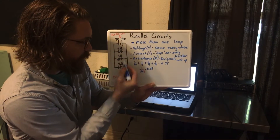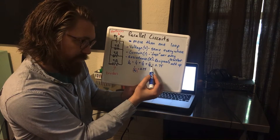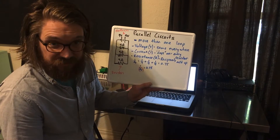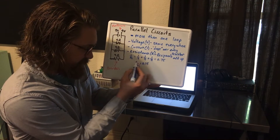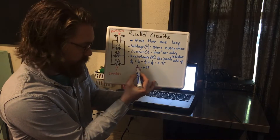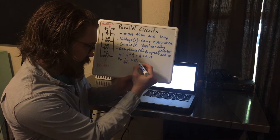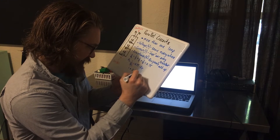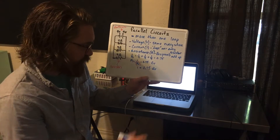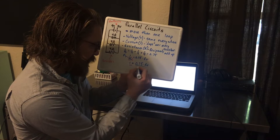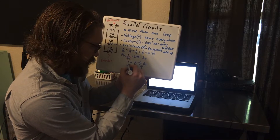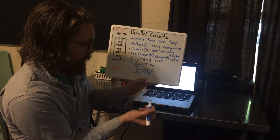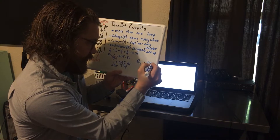We have three four-ohm resistors. One divided by 4 plus one divided by 4 plus one divided by 4 gives me 0.75. So 1/RT = 0.75. To get RT by itself, I multiply both sides by RT — these cancel out, and I get 1 = 0.75 × RT. This is multiplication, so I divide both sides by 0.75, which cancels out, and 1 divided by 0.75 gives me a total resistance of 1.33 ohms.